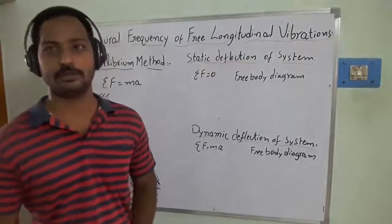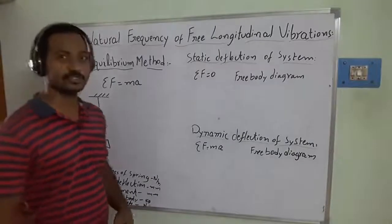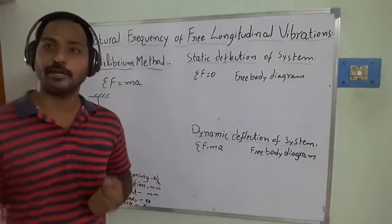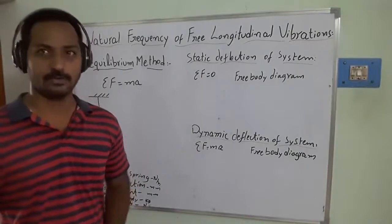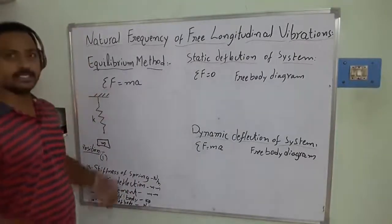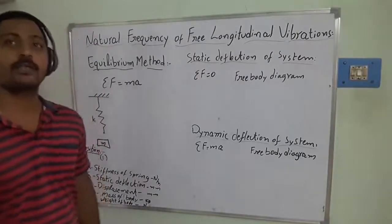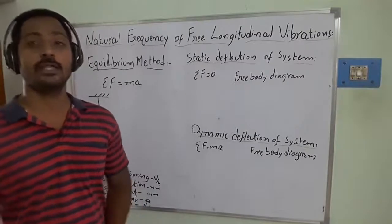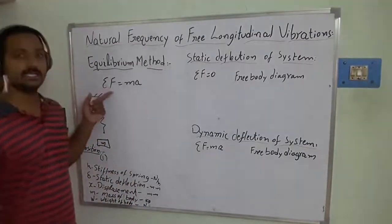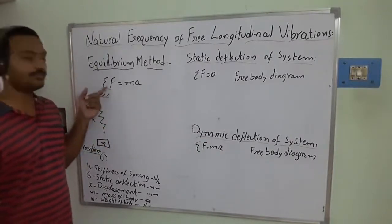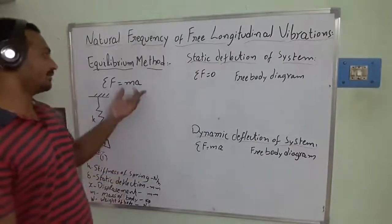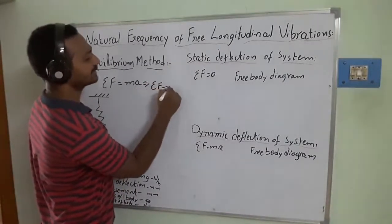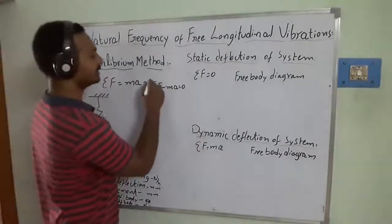To understand this, I am going to use one of the mathematical concepts — the equilibrium method. We are adopting D'Alembert's principle. In D'Alembert's principle, we frame σF = ma, meaning the algebraic sum of all dynamic forces acting on the system is equal to zero. Mathematically, σF = ma, where σF is the sum of all loads acting on the system, and this equals mass times acceleration. We can also write this as σF − ma = 0.